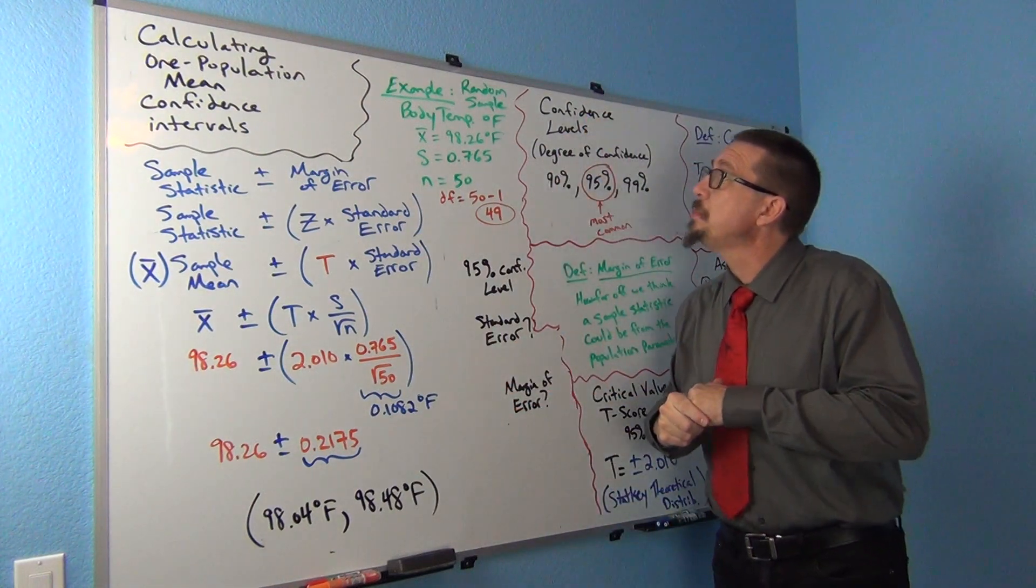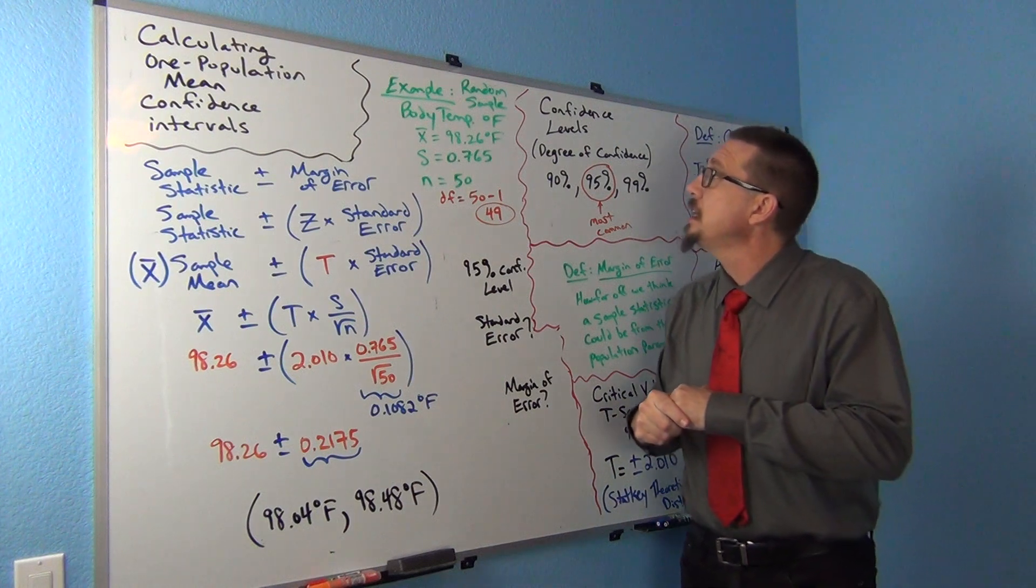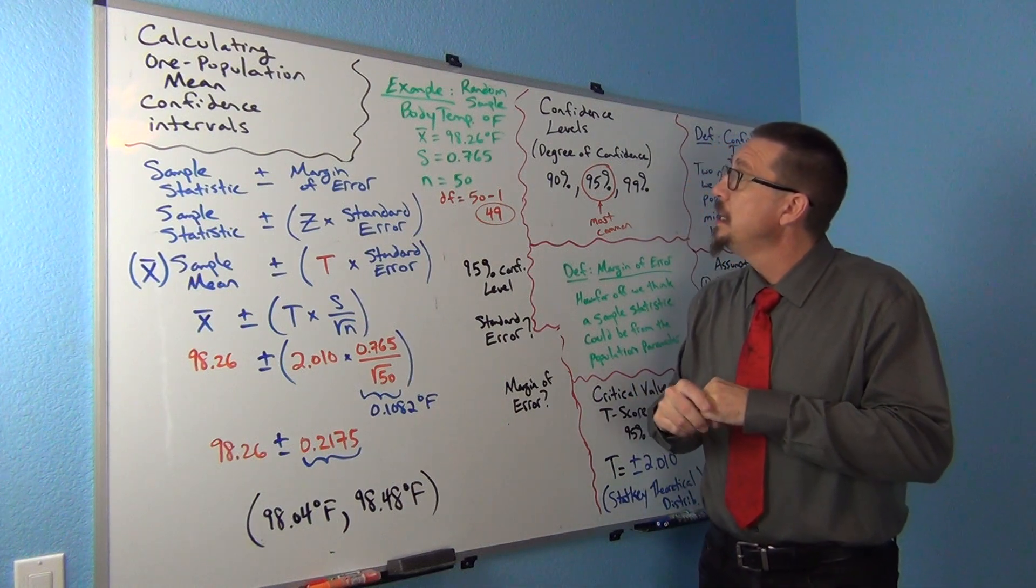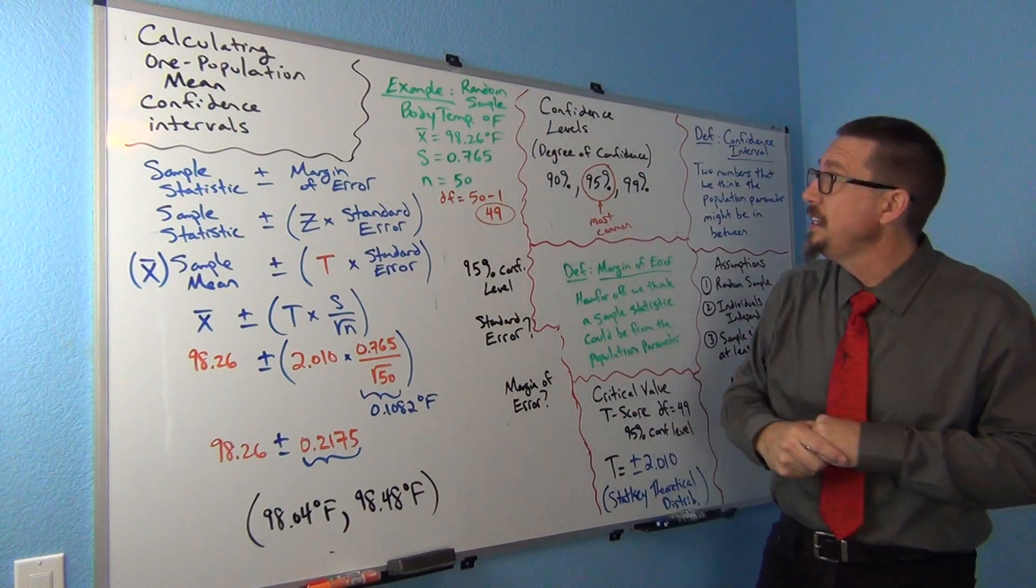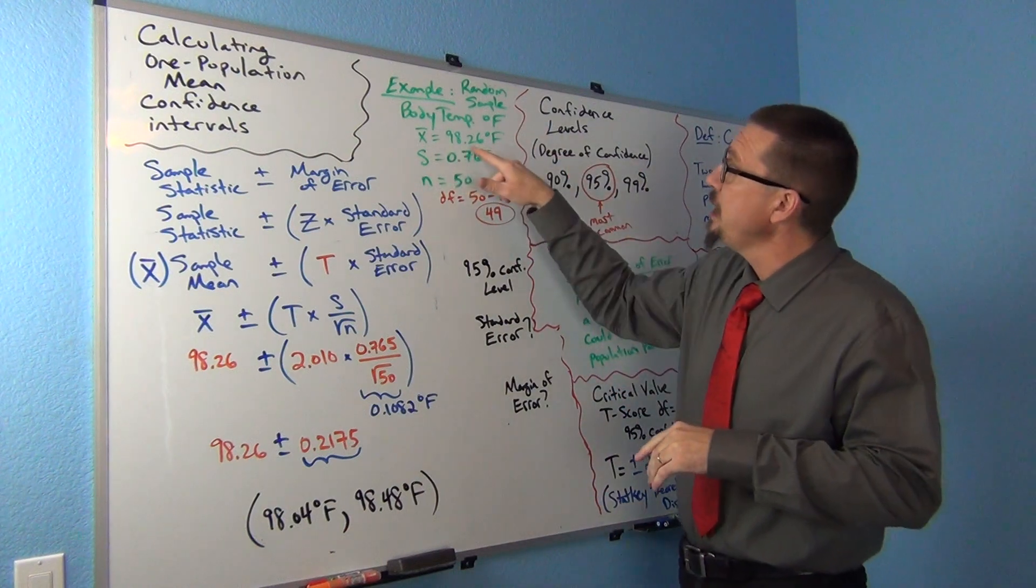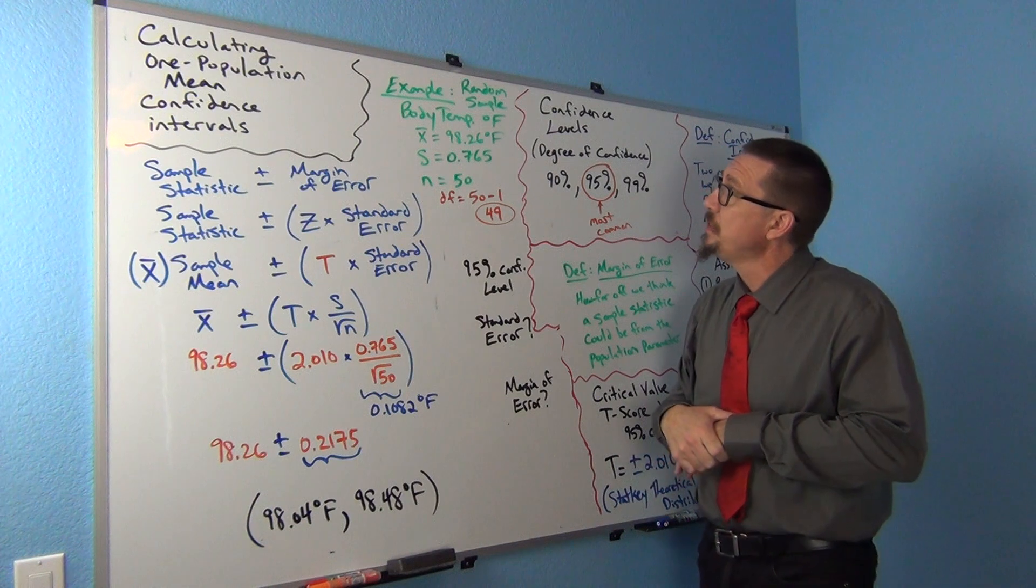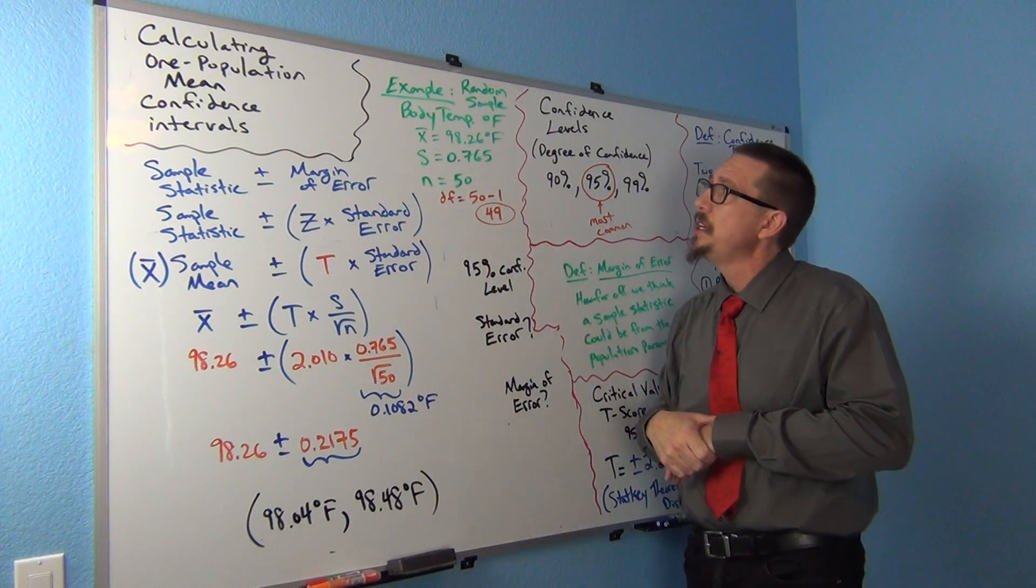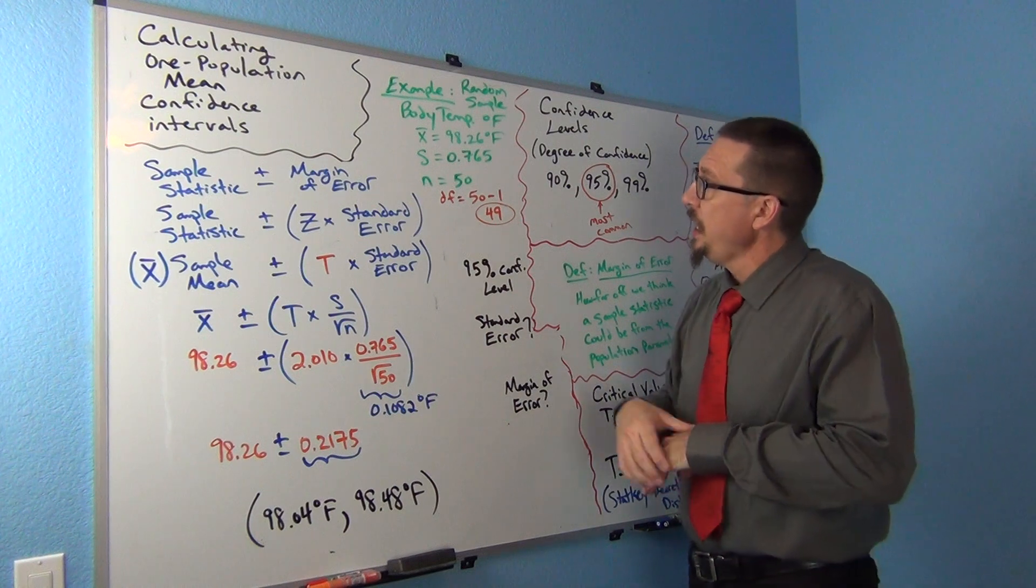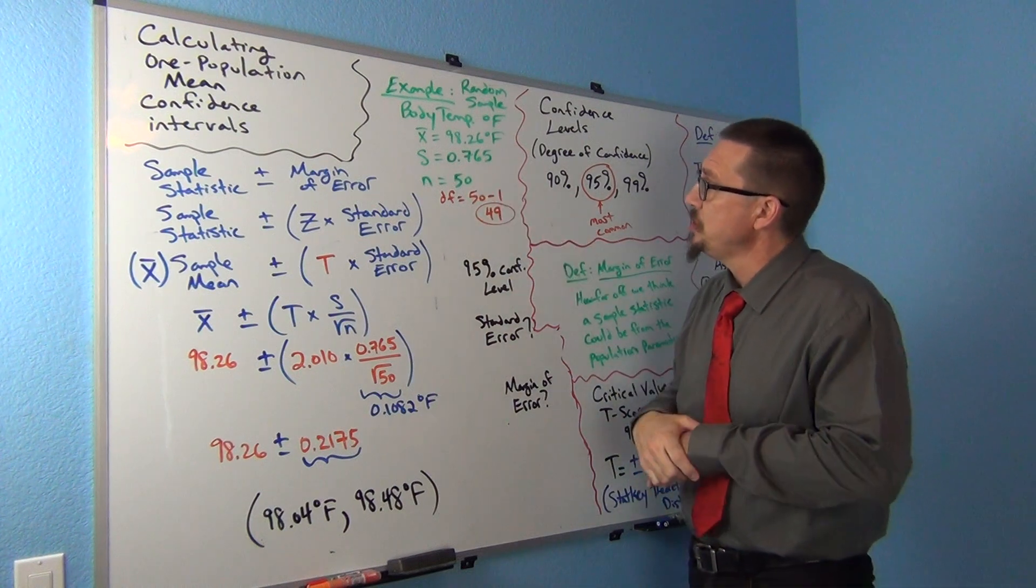I got some random sample data, body temperature data of 50 adults. I got this data off of StatKey. We had a sample mean of 98.26 degrees Fahrenheit and a sample standard deviation of 0.765 degrees Fahrenheit. Our sample size was 50.